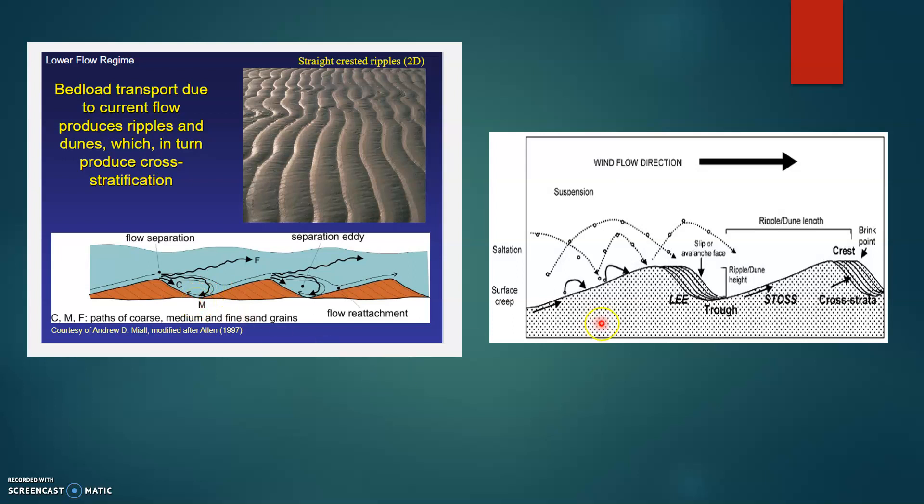However, when it comes to saltation, the sediments are moved in a series of short hops. And once it gets to the crest, the same motion of short hops is still maintained and therefore the distance that the sediments move from the crest to the bottom of the trough is larger compared to when they just avalanche down the leeward side in traction.